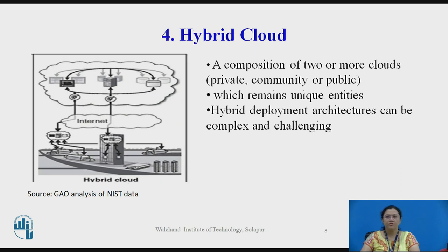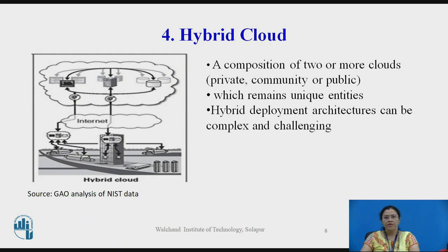Hybrid cloud is a combination or composition of two or more clouds such as private, community or public, which remain unique entities but are bound together by standardized or proprietary technology. This enables data and application portability. Hybrid deployment architectures can be complex and challenging to create and maintain due to the potential disparity in cloud environments and the fact that management responsibilities are typically split between the private cloud provider organization and the public cloud provider organizations.